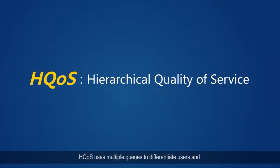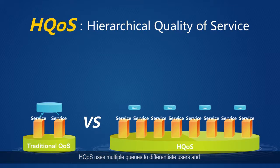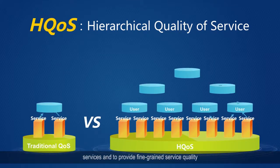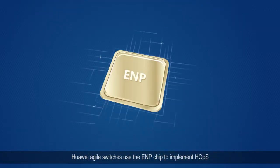HQoS uses multiple queues to differentiate users and services and to provide fine-grained service quality. Huawei Agile switches use the ENP chip to implement HQoS.